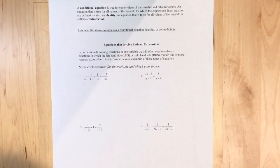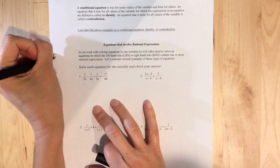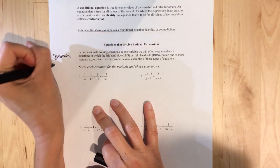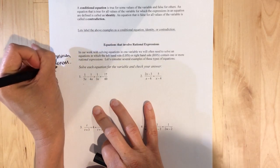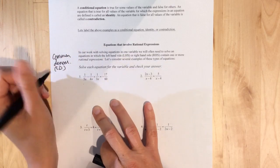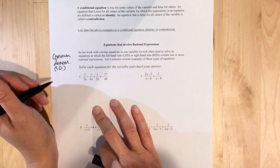So I've got number one, one over five X minus one over four X plus one over three X equals negative 17 over 60. So first thing to ask is what would be a common denominator? So common denominator, I'm going to shorthand CD. So what's the common denominator for one?